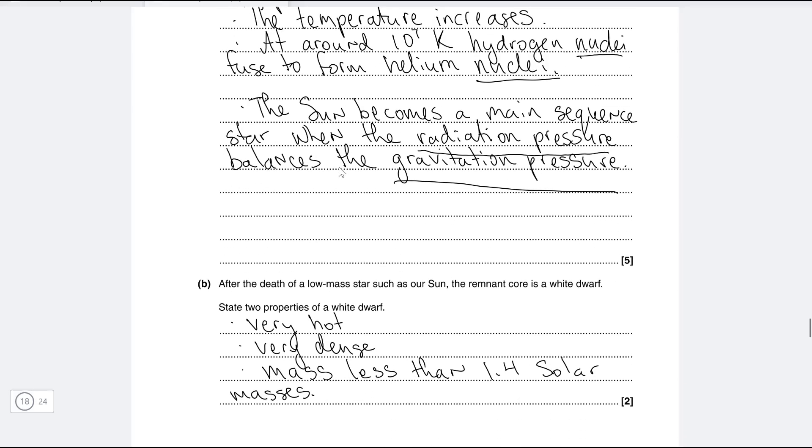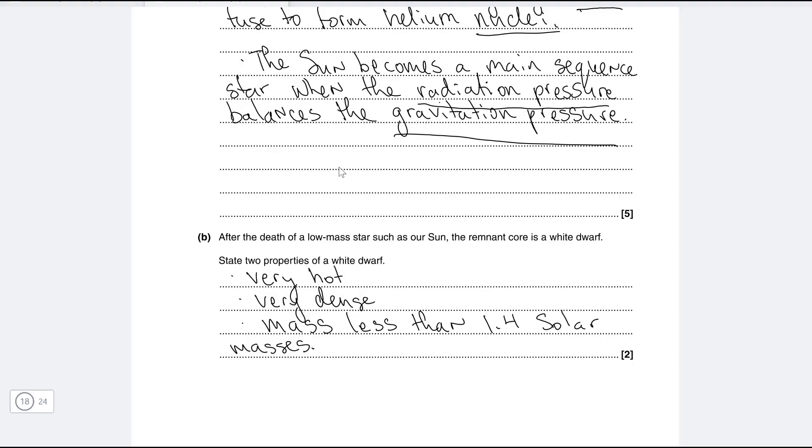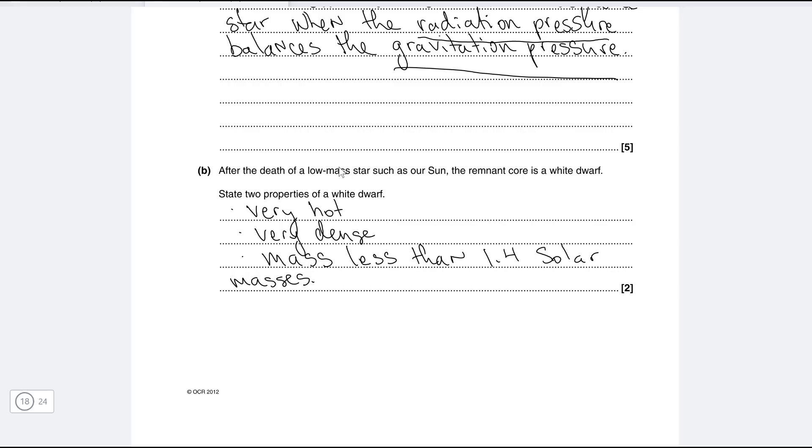Okay so part b. After the death of a low mass star such as our sun the remnant core is a white dwarf. State two properties of a white dwarf. Well number one it's very hot, it's also very dense. Remember in a white dwarf we have the mass close to the mass of the entire sun that's now contained in approximately the size of a planet. So it's very very dense indeed and additionally we have the Chandrasekhar limit which states that the mass needs to be less than 1.4 solar masses.